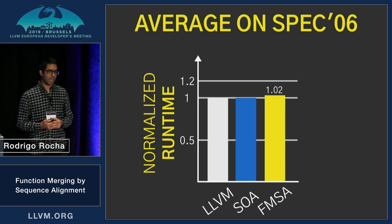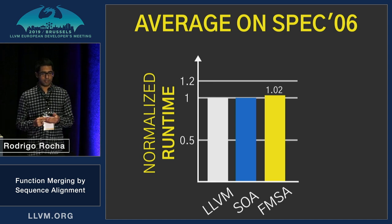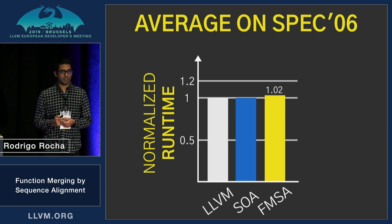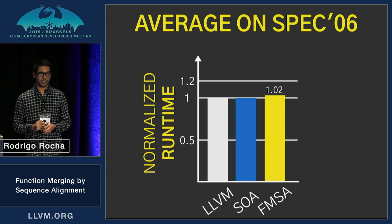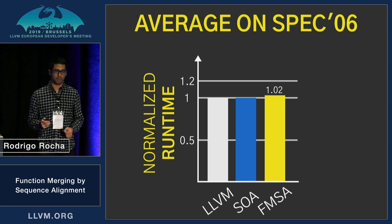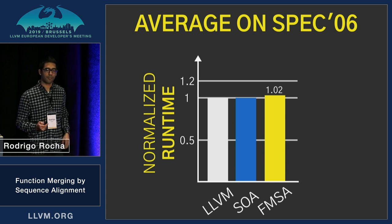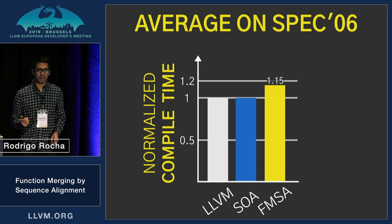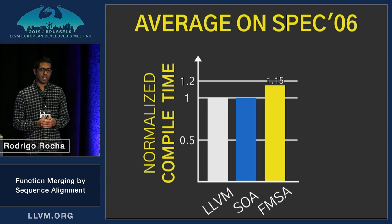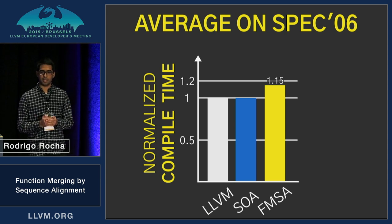Looking at runtime, we have a slight overhead. For example, we can introduce overheads inside hot blocks. But we did some case studies using profiling, and we can basically bring this overhead to zero if you just don't merge the hot functions or hot basic blocks, and it still gets some meaningful code size reduction. For compilation time overhead, we had a small overhead of 15%, but we are still looking into ways of reducing this even further and we have some ideas we are investigating.